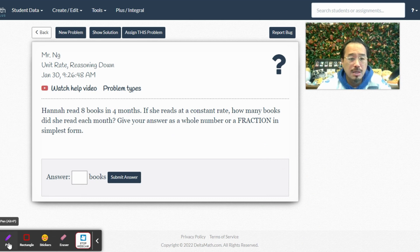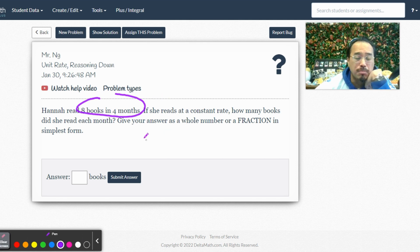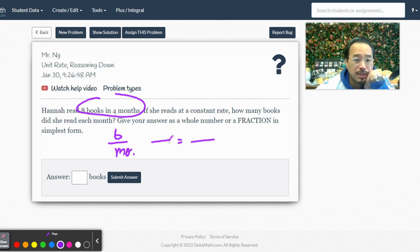Now let's see. Hannah reads eight books in four months. If she reads at a constant rate, how many books - there's your first clue - how many books does she read each month? So it's per month, books per month. Got it. Eight books in four months, how many books in one month? Give your answer as a whole number or a fraction in simplest form. They don't want decimals.